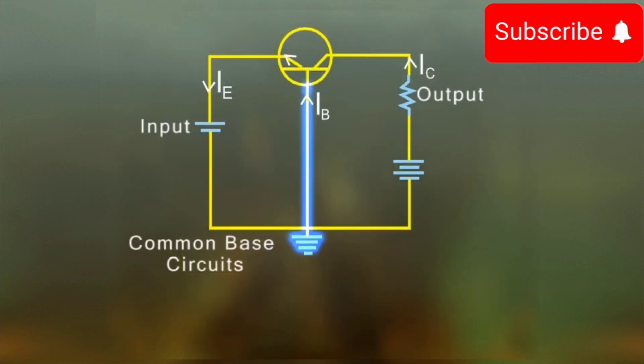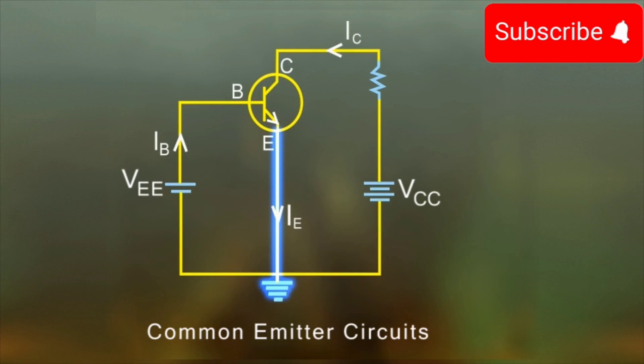In a common base circuit, the ratio IC upon IE is called the current gain alpha. In common emitter circuit, IC upon IB is called the current gain beta.